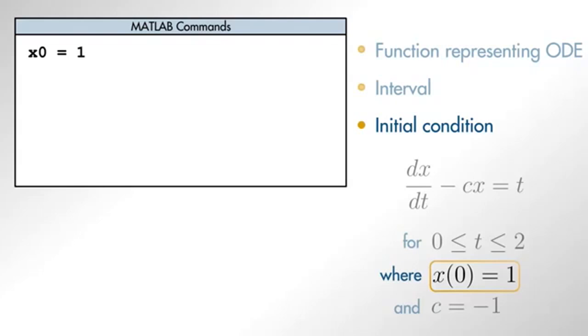We will use a vector to represent the interval where we want to approximate the solution. For example, if the independent variable is time, we may want to observe the solution of a system between 0 and 2 seconds.